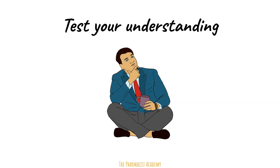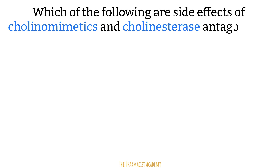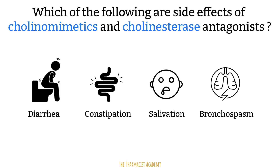Now it's time to really test your understanding. If you understood the different classes of drugs in the autonomic nervous system, their mechanisms of action, and their indications, then you should be able to identify some side effects. Which of the following are side effects of cholinomimetics and acetylcholinesterase inhibitors? Both of these classes increase the levels of acetylcholine, which is part of the rest and digest, or parasympathetic, portion of the autonomic nervous system. Therefore, we should see more diarrhea, salivation, and bronchospasm. The airways open during fight or flight, not when you're resting and digesting.